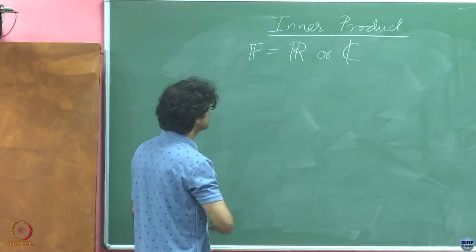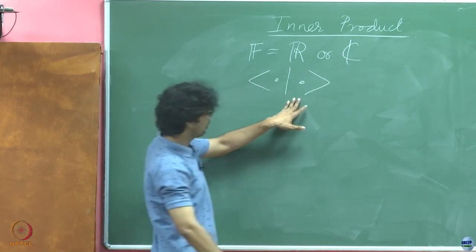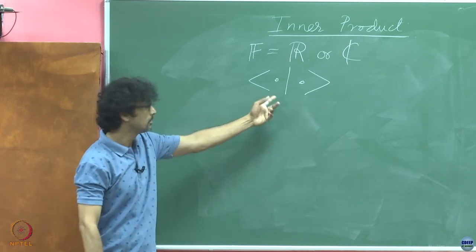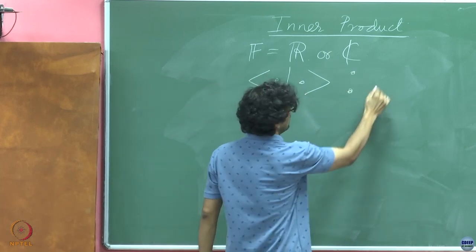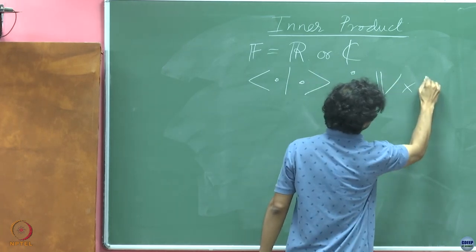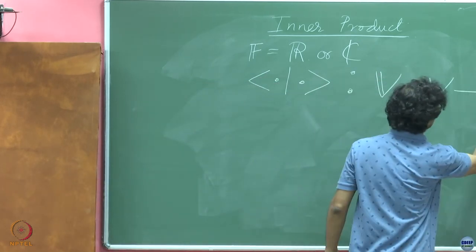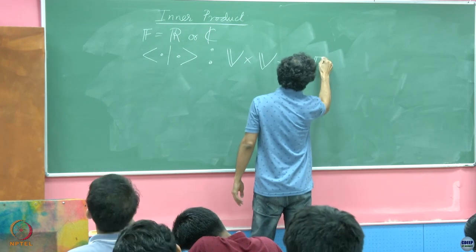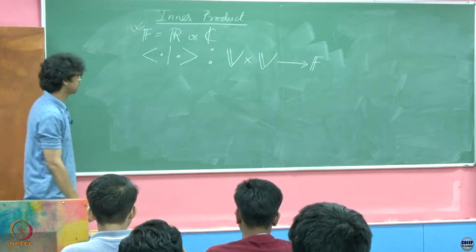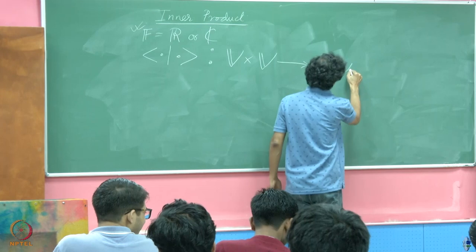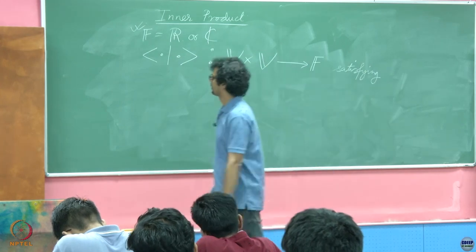So what is the inner product? It takes objects in the vector space — it is a binary map — and maps them to the field, which is either R or C, satisfying the following properties. This is how we denote an inner product: the first argument and the second argument.